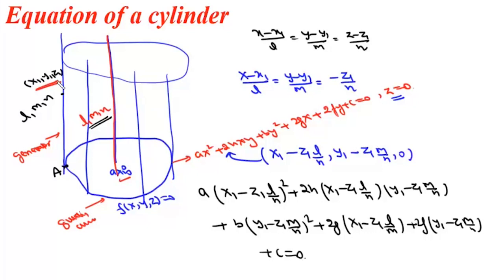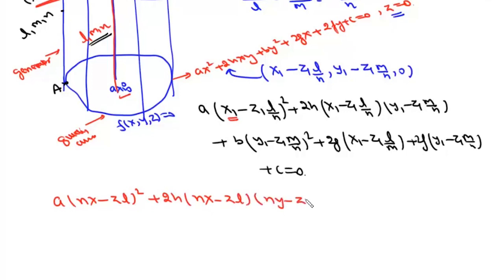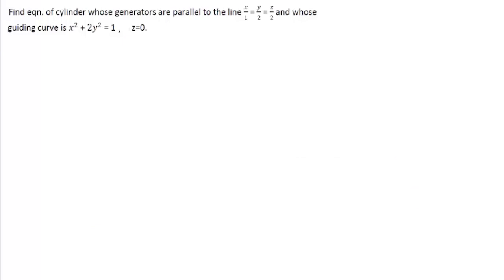Now we need the locus of (X1, Y1, Z1), so we replace X1 with X, Y1 with Y, and Z1 with Z. The equation of this cylinder will be: A(NX − ZL)² + 2H(NX − ZL)(NY − ZM) + B(NY − ZM)² + 2GN(NX − ZL) + 2FN(NY − ZM) + CN² = 0. This is the equation of the cylinder.